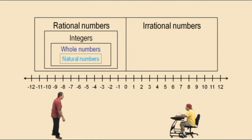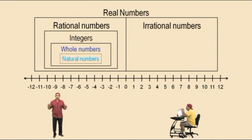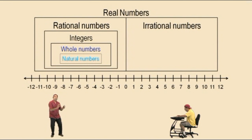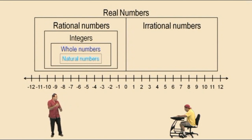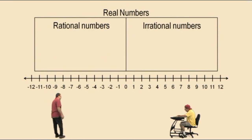So together, the rational numbers and irrational numbers make up the real number system. Within the set of real numbers are the rationals and the irrationals. And within the rationals are all these other groups: integers, whole numbers, and natural numbers. So let's look at some actual numbers and define some rational and irrational numbers.